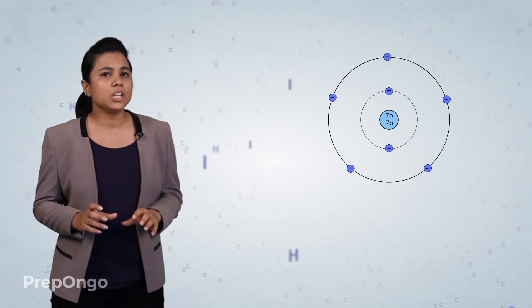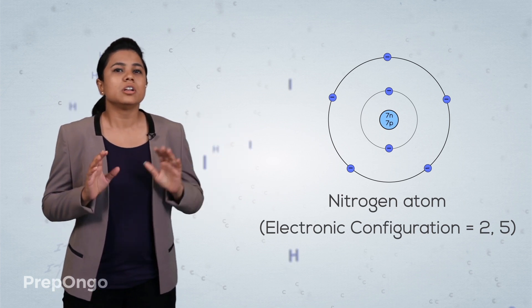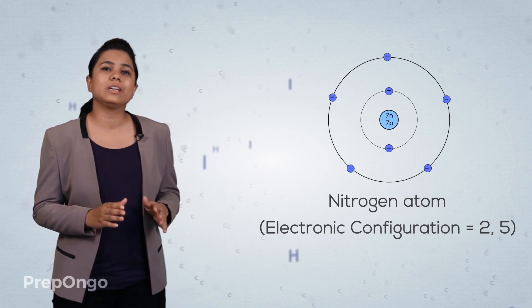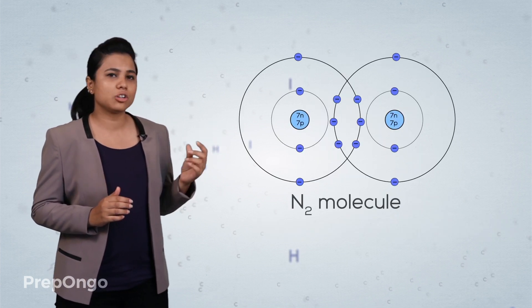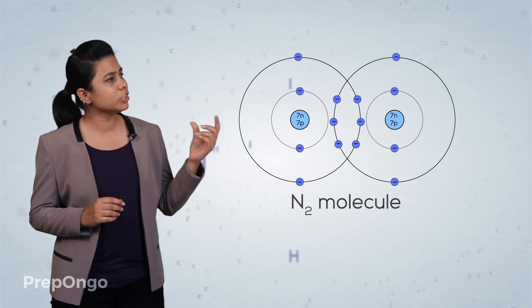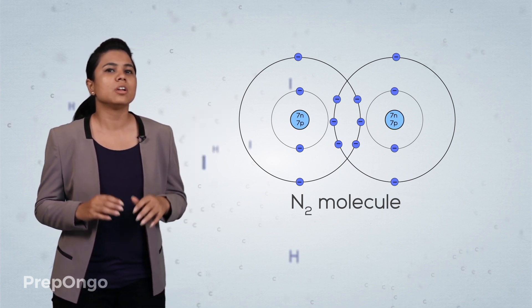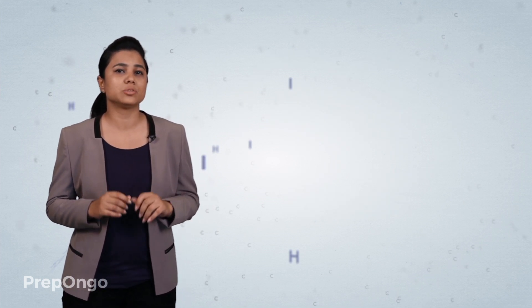Three electrons are also shared by atoms, like in the case of nitrogen. Nitrogen has an electronic configuration of 2 and 5, so it requires three electrons to gain the nearest noble gas configuration of neon. It will share three electrons from another nitrogen atom to stabilize its octet. Here you can see that three electrons are shared by each nitrogen atom.